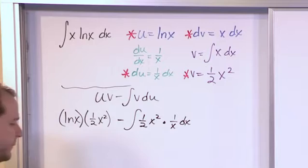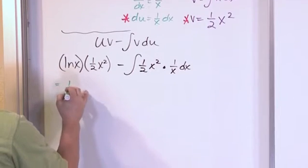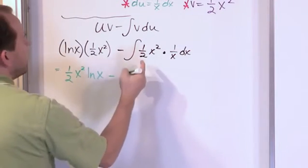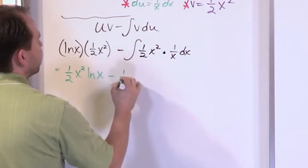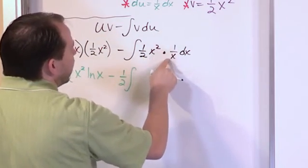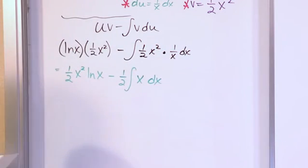Alright, so it looks like we might be making headway, but we need to simplify this a little bit before we can tell for sure. So let's just tidy this up a little bit. 1/2 x squared times the natural log of x minus—the 1/2 here can come out. Inside the integral I have an x squared times 1 over x, so all I'm going to have on the inside is x dx, okay?